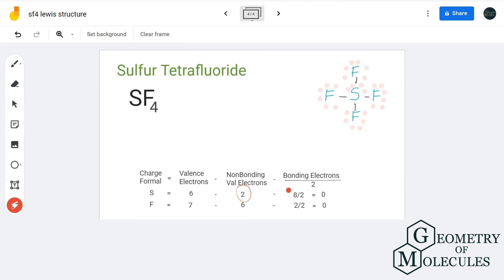This gives us a formal charge of zero for sulfur. For fluorine, we have seven valence electrons, out of which six are non-bonding and two are bonding, which will give us a formal charge of zero.